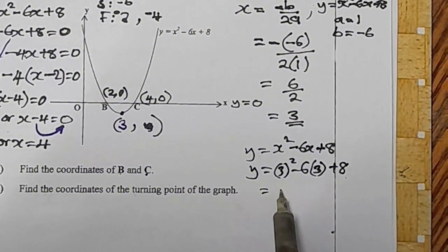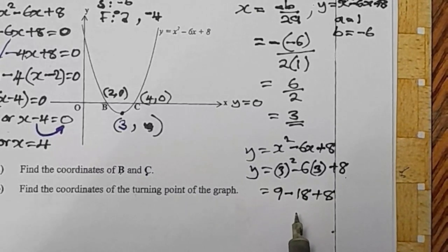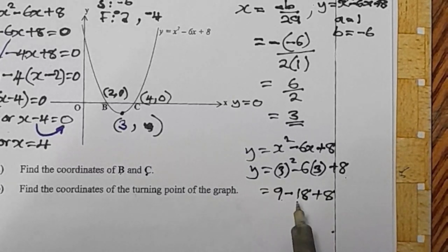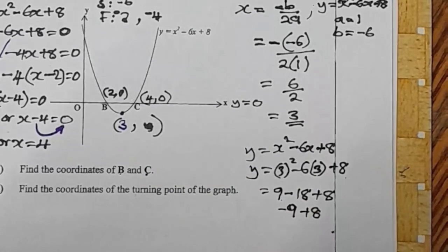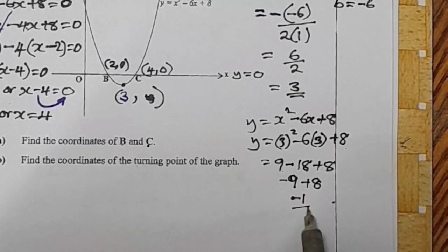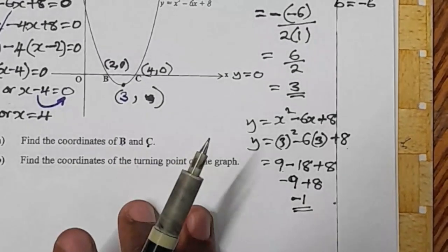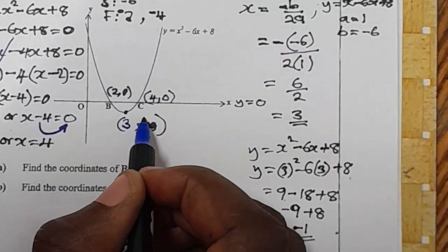So we have 9 minus 18 plus 8. Since this is paper 1 with no calculator, you can use BODMAS. Working from left to right: 9 minus 18 is negative 9, then negative 9 plus 8 means that the y value here is negative 1.